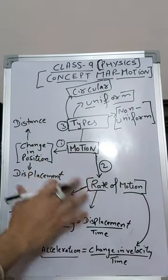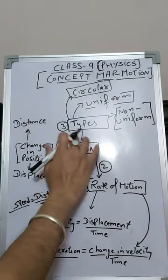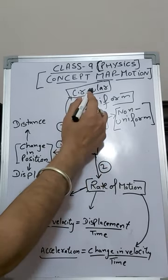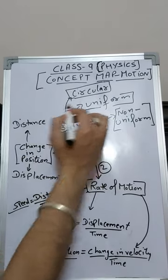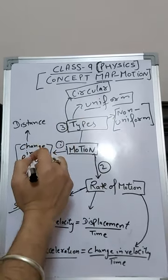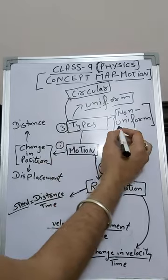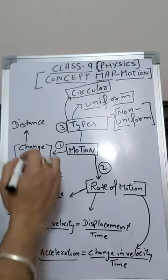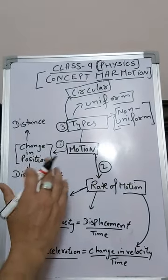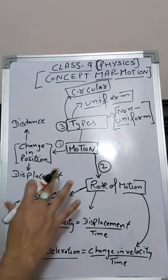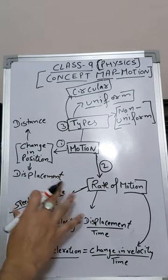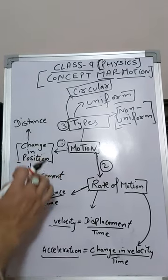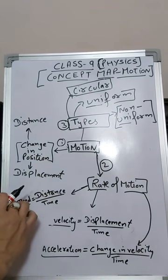After these two topics, we will discuss the types of motion. The first one is uniform motion, the second is non-uniform motion, and the third is circular motion. So one by one in this chapter we will discuss all these things. Let us start with distance and displacement.